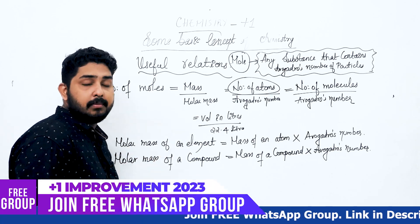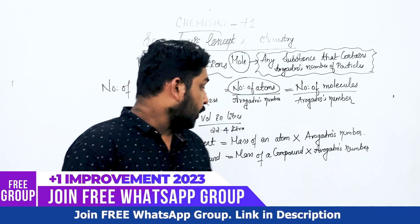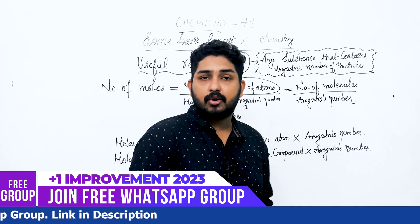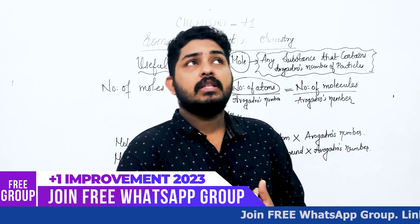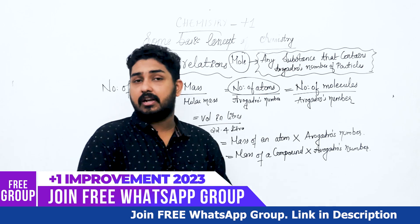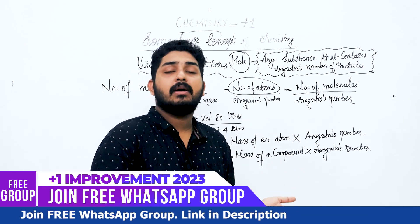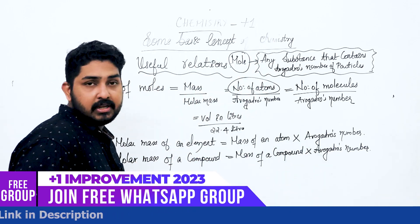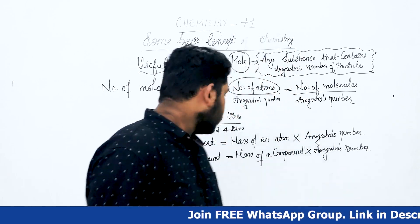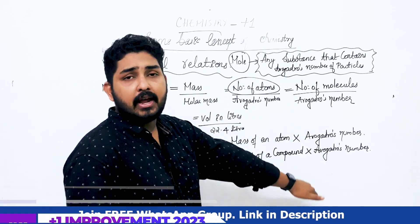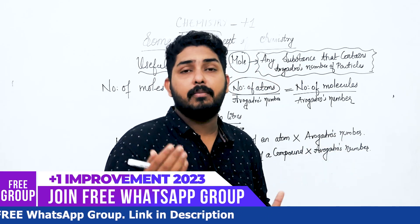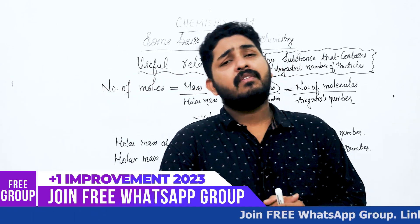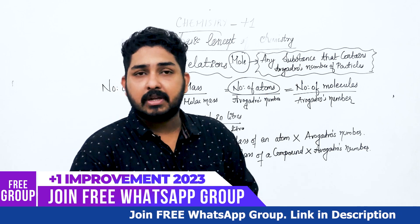Now we have to take a molar mass. We have to take the molar mass of an atom multiplied by Avogadro's number — that is one mole. We have to take the molar mass of an element — that is the molar mass of an atom. We will check some of these problems.